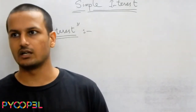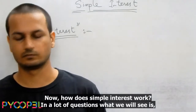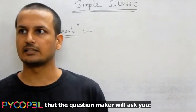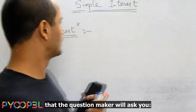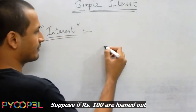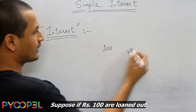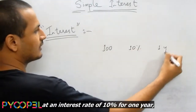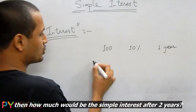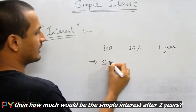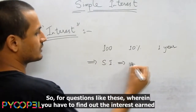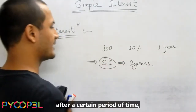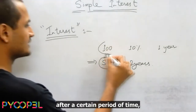So how does simple interest really work? In a lot of questions, what we will see is that the question maker would ask you: suppose 100 rupees are loaned out at an interest rate of 10% for one year, then how much would be the interest after 2 years, after a certain period of time?